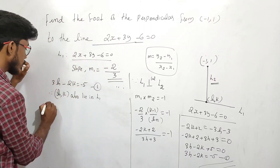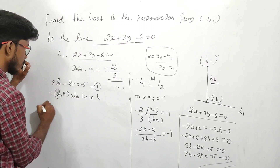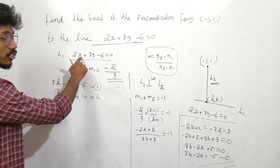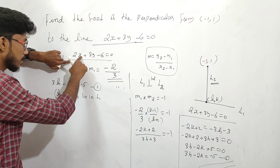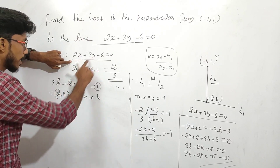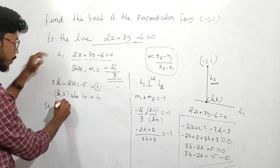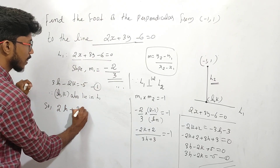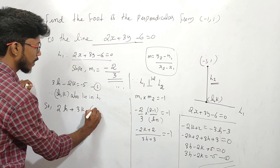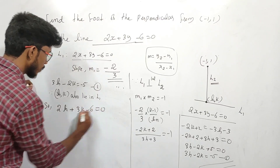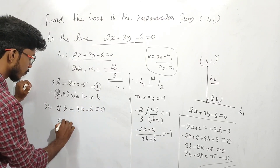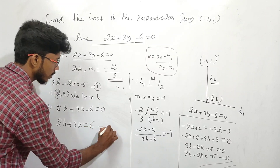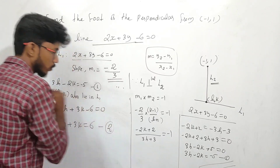Since (h, k) lies on the line, substitute x = h and y = k into 2x + 3y - 6 = 0, which gives 2h + 3k - 6 = 0, which means 2h + 3k = 6. This is equation number 2.